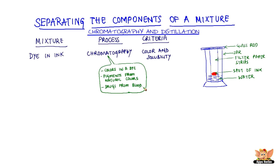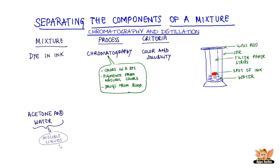We have already seen a method for separating immiscible liquids using the separating funnel. Let's see how we can separate miscible liquids. Miscible liquids are those liquids which can be mixed in any proportion to form a homogeneous mixture. A mixture of water and acetone is one such example.